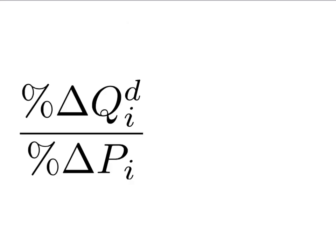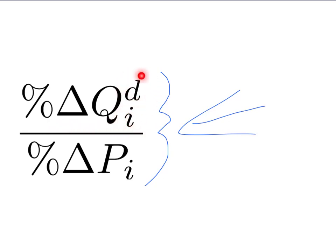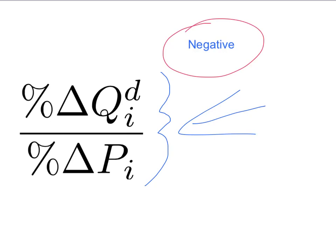Our formula for the own price elasticity of demand is given here. On the top part of our fraction, we have the percentage change in the quantity of good I that is demanded. On the bottom part of the fraction, we have the percentage change in the price of good I. It's the own price elasticity of demand because we're looking at the change in quantity of good I demanded for a change in the price of good I. And whenever the demand curve slopes down, if price goes up, quantity demanded falls; if price goes down, quantity demanded rises. So our own price elasticity of demand will be negative because quantity and price move in opposite directions.